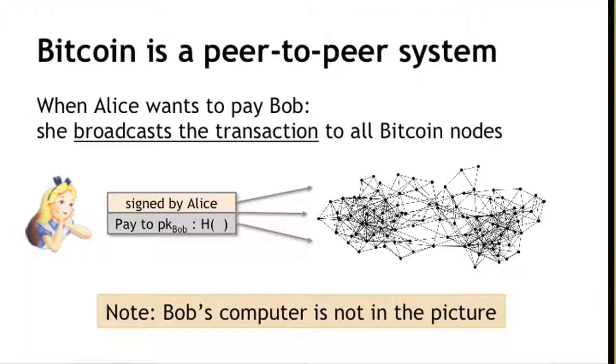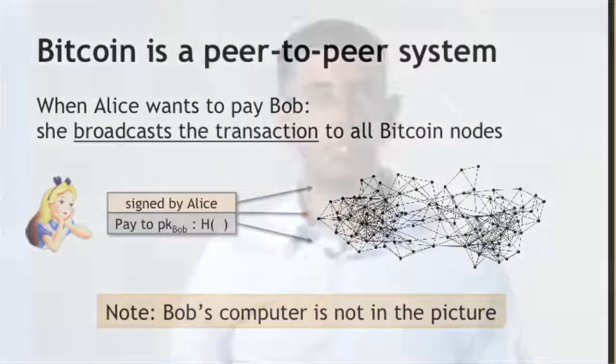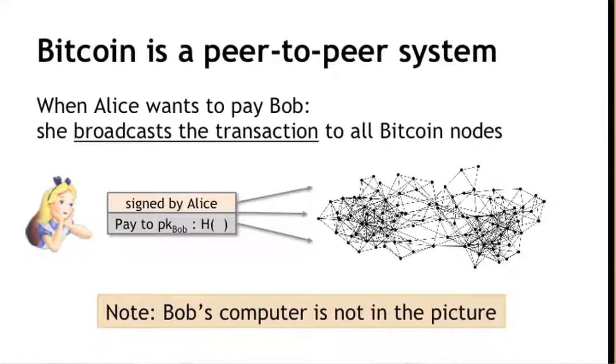Notice something important: Bob's computer is nowhere in this picture. If Bob wants to be notified that the transaction happened and that he got paid, he might want to run a Bitcoin node to listen on the network. But his listening is not necessary for him to receive the funds — the Bitcoins will be his whether or not he's running a node on the network. Given this peer-to-peer system, what is it exactly that the nodes want to reach consensus on? Given that users are broadcasting transactions to the network, everybody wants to reach consensus on which transactions were broadcasted and the order in which they happened.